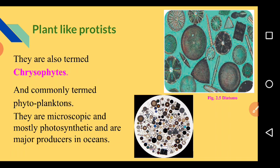The first group is plant-like protists, also termed as chrysophytes, commonly known as phytoplanktons. They are microscopic and mostly photosynthetic, and are major producers in the ocean.